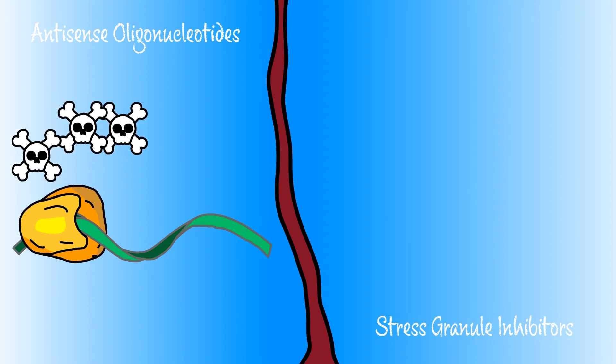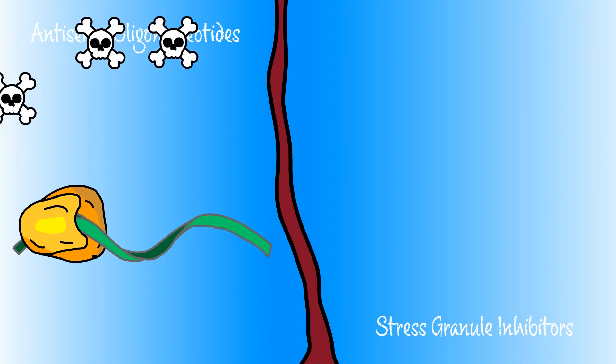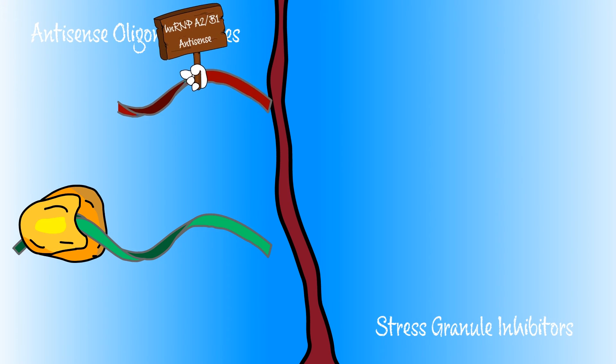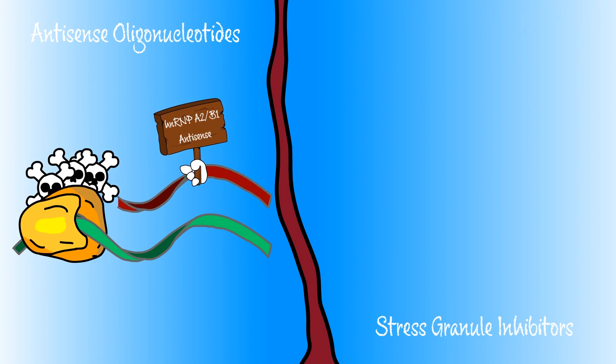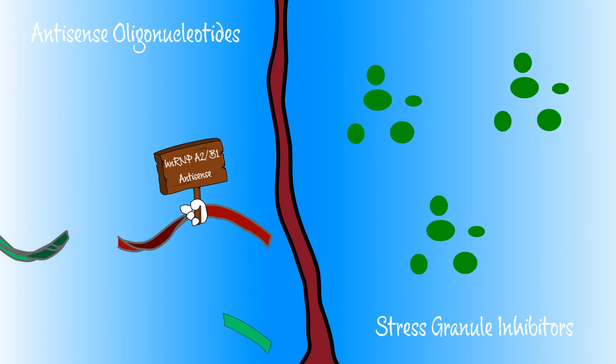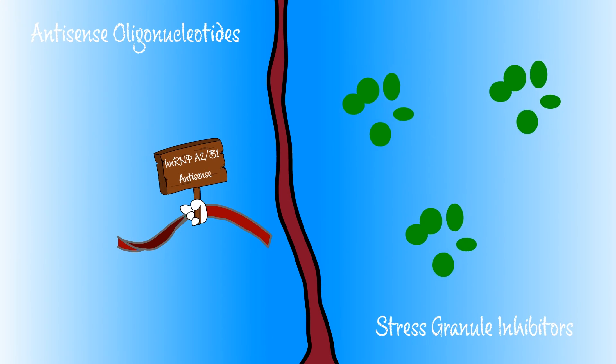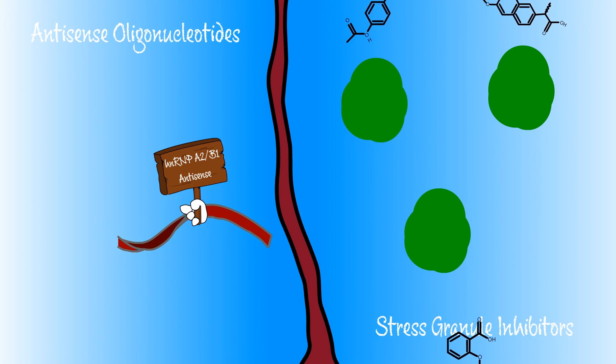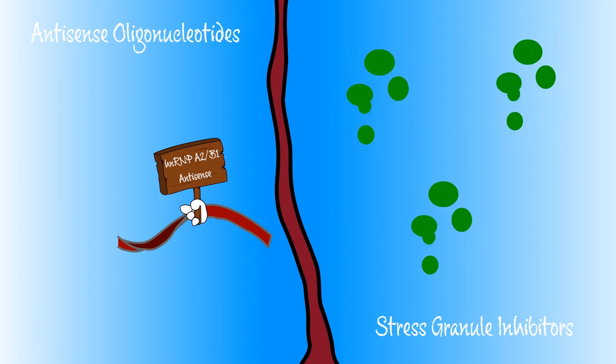We've thought of two possibilities. The first is to simply get rid of the toxic proteins. This could be done with special DNA-like molecules called antisense oligonucleotides, or ASOs. When ASOs find their target, they cause the RNA to be degraded, halting production of the toxic protein. The second strategy is to target stress granules. This could be done with small molecule drugs that prevent stress granule formation, or force granules to come apart.